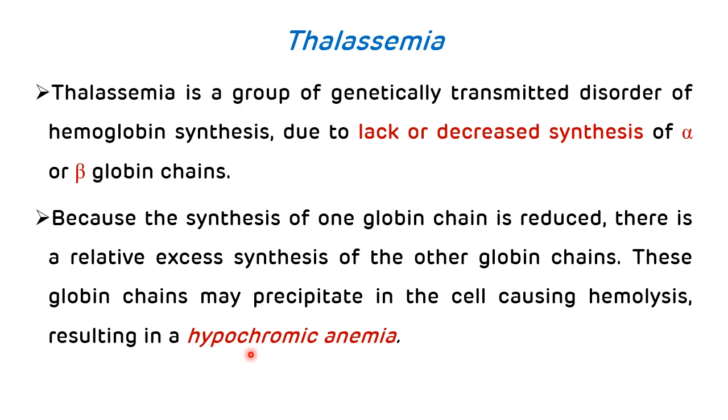As there is a complete lack or decreased synthesis of particular globin chains, there will be a relative excess synthesis of other globin chains. These globin chains may precipitate in the cell causing hemolysis, and ultimately it will lead to hypochromic anemia, which is one of the characteristic findings seen in thalassemia.